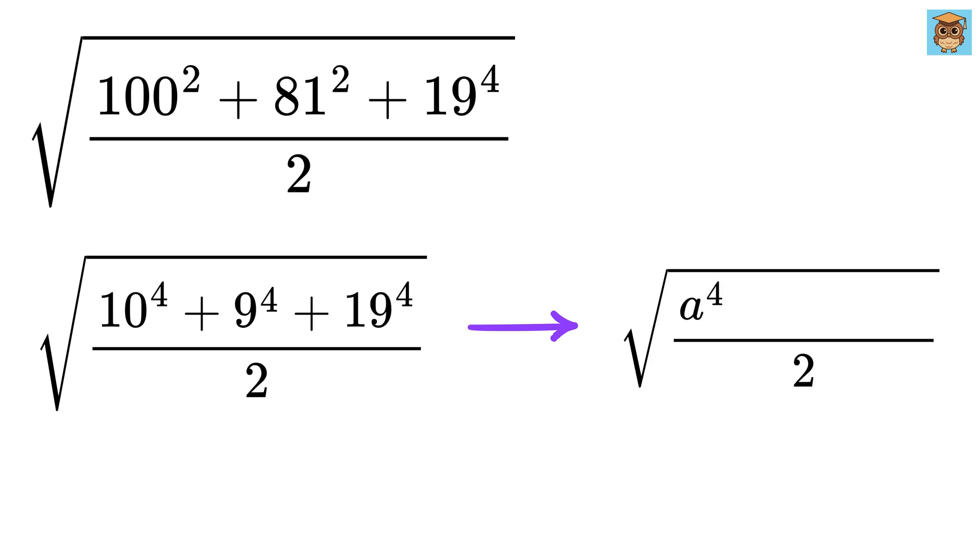So this is of the form A to the 4th power plus B to the 4th power plus C to the 4th power, where A is 10, B is 9, and C is 19.